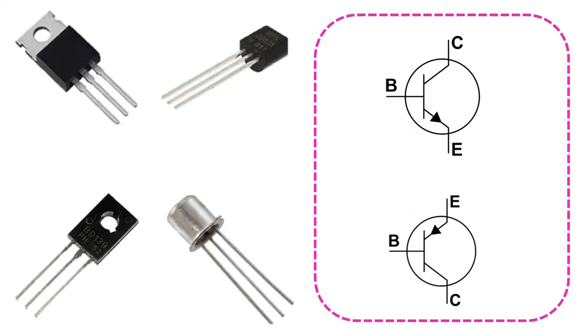These symbols are also used for BJT transistors, which are the most important circuit element of electronics and serve as switching and amplification. The NPN above is the symbol of the PNP transistor below.